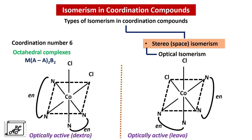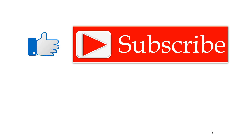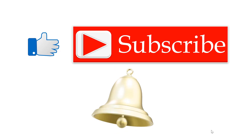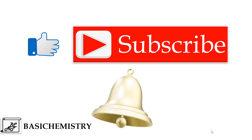The trans isomer of this complex is optically inactive. Here we have completed optical isomerism and also the topic of isomerism in coordination compounds. In the next video of this playlist on Chemistry of Coordination Compounds, we will see the different methods to distinguish between cis and trans isomers. If you like this video, click on like, share, and subscribe to my channel. Mention any questions in the comment box, and hit the bell icon to get notifications of new videos. Keep watching Basic Chemistry. Thank you.